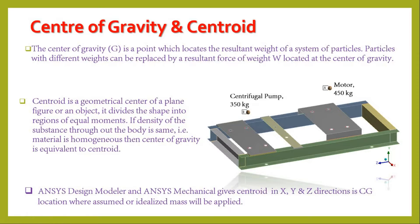The second term is centroid. The centroid is the geometrical center of a plane figure or object — it basically divides the shape into regions of equal moments. If the density throughout the body is the same, meaning the material is homogeneous, then the center of gravity is equivalent to the centroid. Centroid represents 2D plane figures while CG is for 3D components. ANSYS Design Modeler and ANSYS Mechanical give the centroid in X, Y, and Z direction, which is the CG location where the idealized mass will be applied.